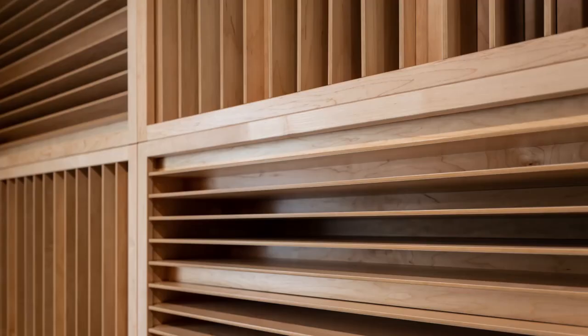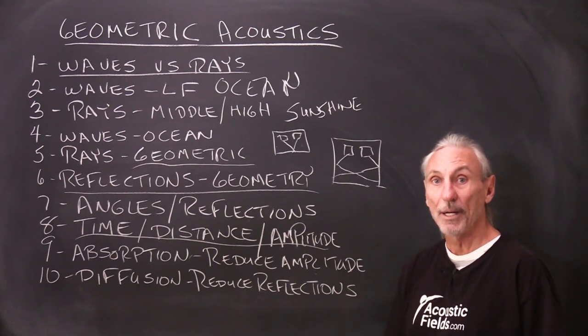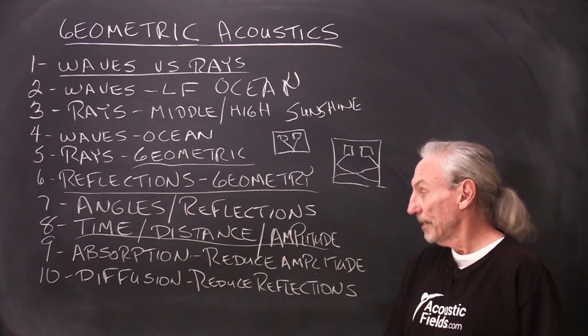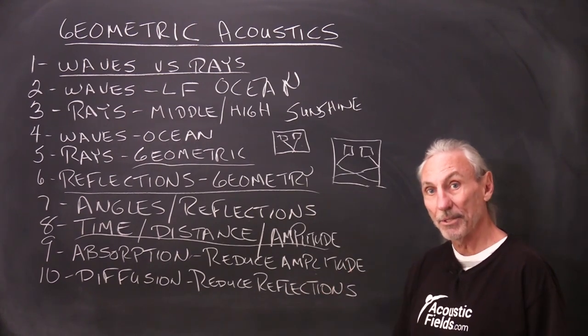Diffusion, we don't reduce the strength of the energy. We reduce the strength of the reflection. We kind of take a big reflection and bust it up into little ones so the brain has a hard time localizing. So we use the brain and our ear system to our benefit acoustically with diffusion.